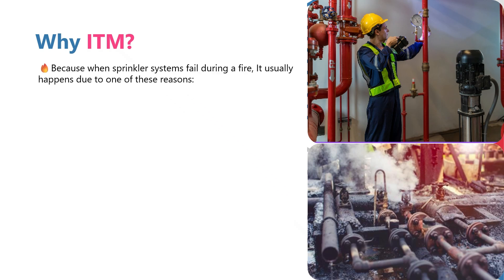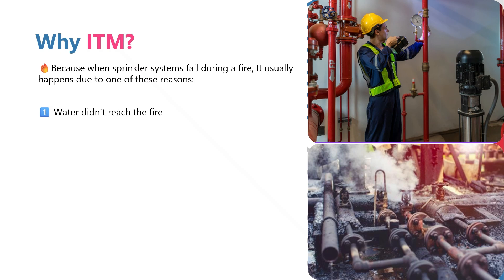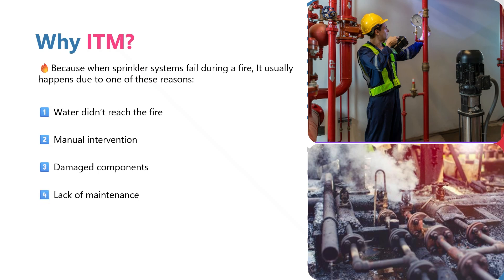When a system fails during a fire, it usually happens due to one of the following reasons: water didn't reach the fire because someone left a valve closed, or manual intervention where a repair was done but the valve wasn't reopened; damaged components like a corroded sprinkler head or broken pipe; or lack of maintenance — dust, debris or aging parts that were never tested. That is exactly why NFPA 25 exists — to prevent these failures before a fire happens. Bottom line: even a perfectly installed system can fail if it's not properly maintained.